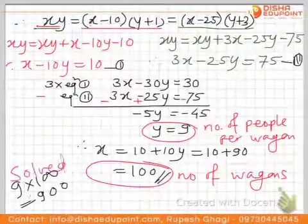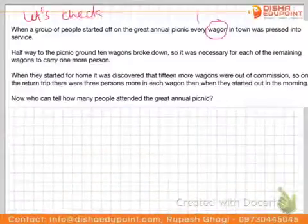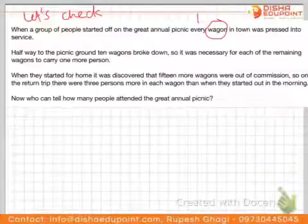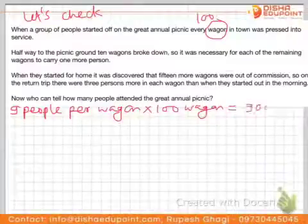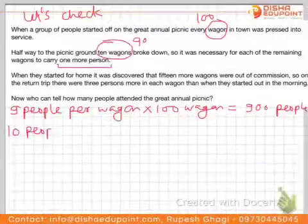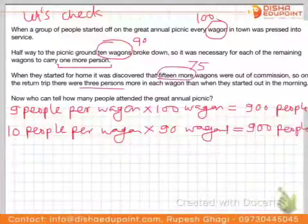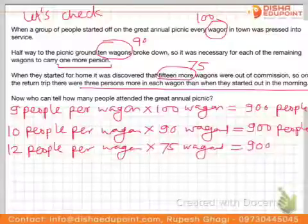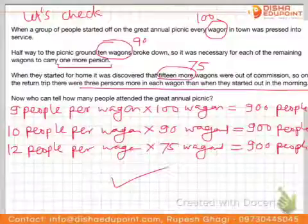Is our answer correct? Let's verify. Starting with 100 wagons and 9 people each gives 900 people. After 10 wagons break down, 90 wagons with 10 people each still gives 900. On the return, 75 wagons with 12 people each also gives 900. Our solution is correct.